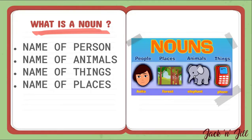Anita is an example of the name of a person. Forest is an example of the name of a place. Elephant is an example of the name of an animal. And phone is an example of the name of a thing.